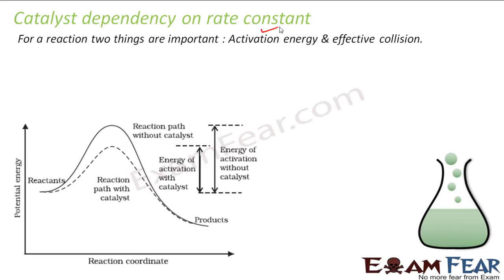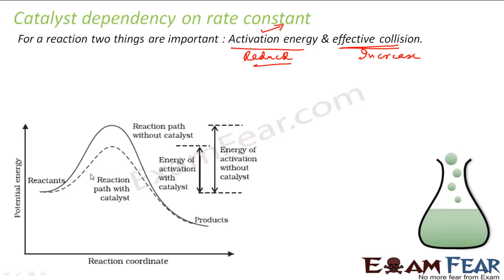Catalysts do this by doing two things: they either lower the activation energy of the system or they increase the effective collision. For a reaction to happen, according to collision theory, two things matter: activation energy and effective collision. Catalysts reduce the activation energy by providing an alternate pathway, and they help in forming a complex intermediate easily by forming temporary bonds with the reactants.